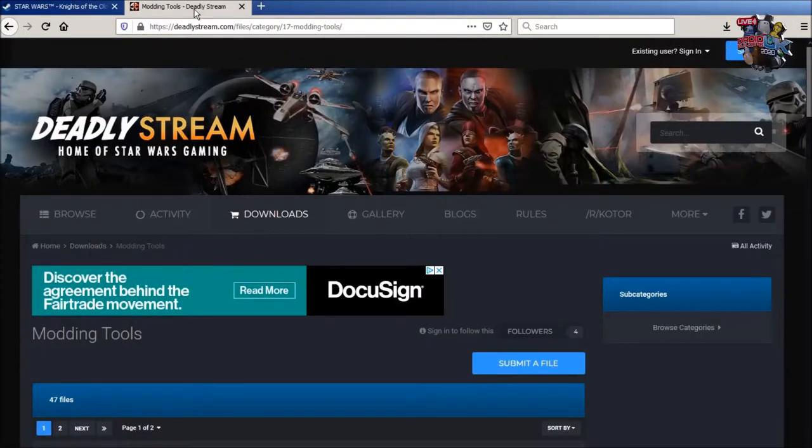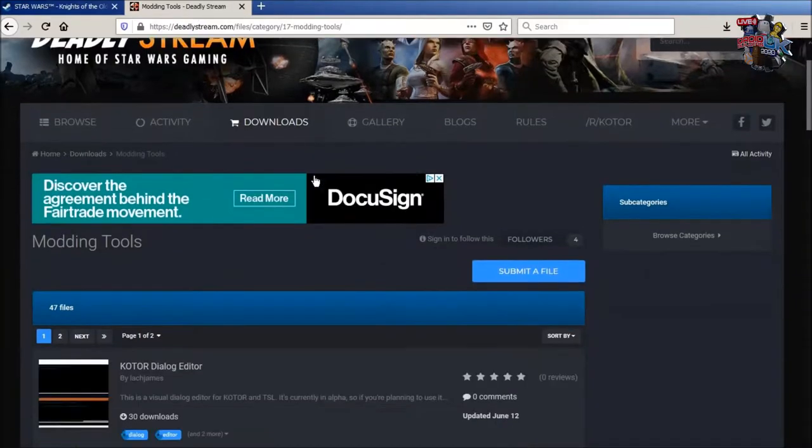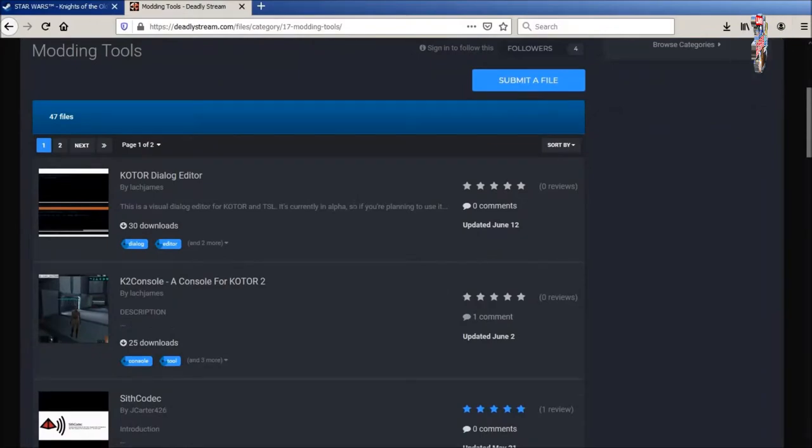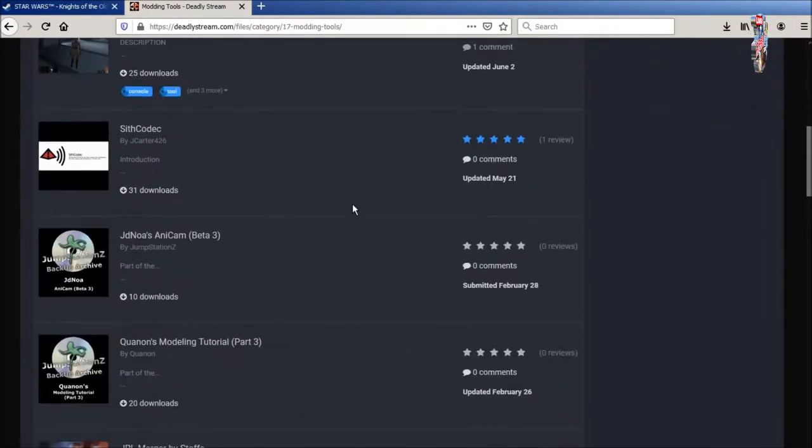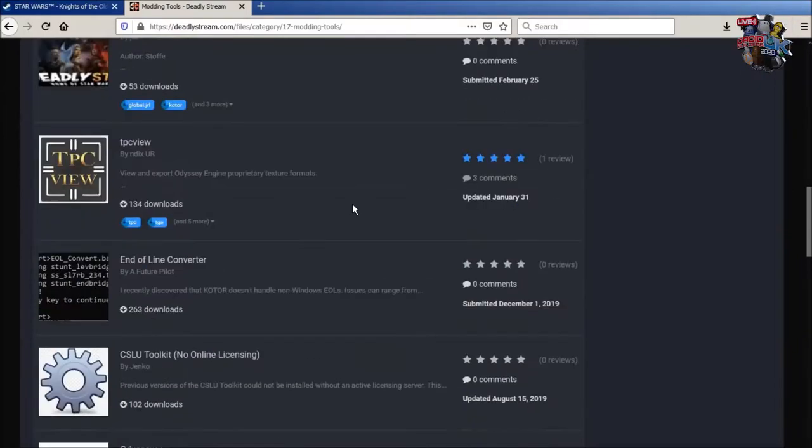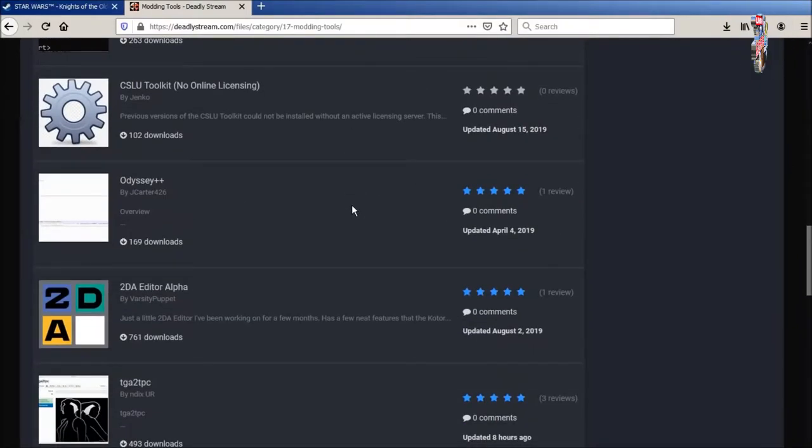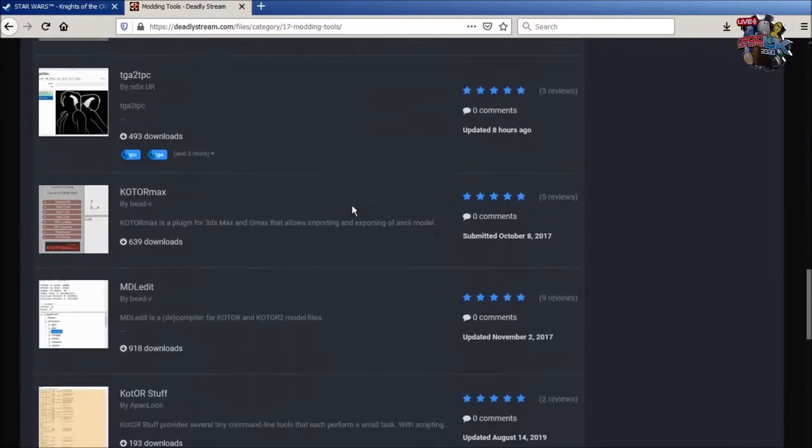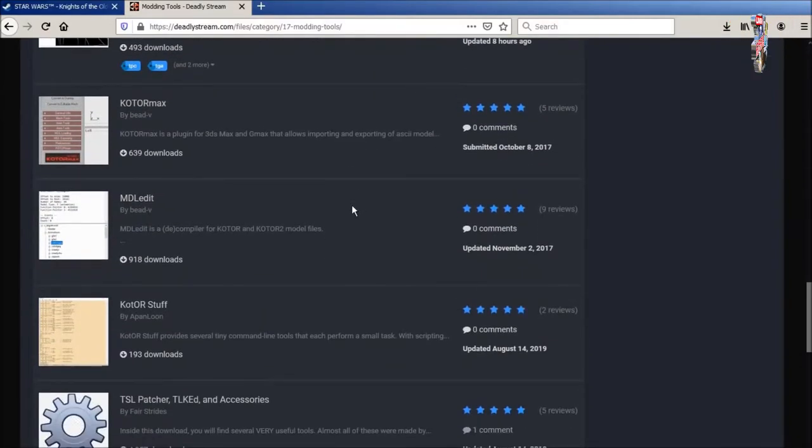So once the game's installed and you have all the sub-directories you can install various modding kits. The modding community for Knights of the Old Republic was huge and there's lots of sites dedicated to them. Some are now defunct but one that's still live is Deadly Stream and it has lots of nice utilities available. So you have Kotor tool and various other utilities to rip things from the game.